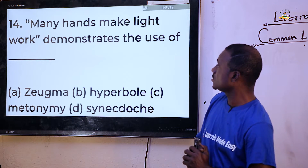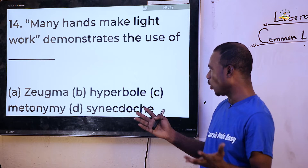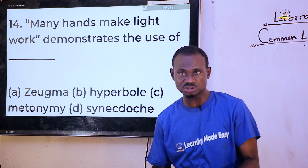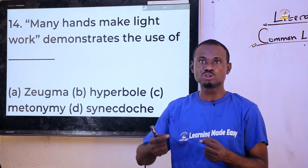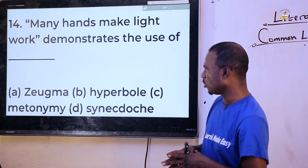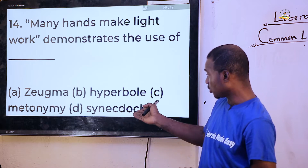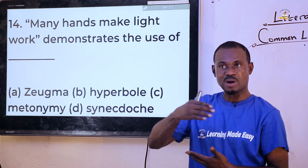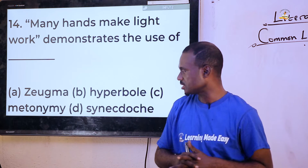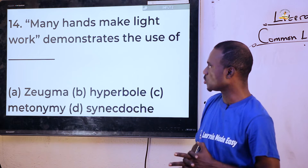Question fourteen: 'Many hands make light work demonstrates the use of dash.' Options are zeugma, hyperbole, metonymy, and synecdoche. It is not zeugma — that uses a verb for two purposes. Not hyperbole — that is exaggeration. Not metonymy — that is a change of name or figure of association. The answer is synecdoche, where a part represents a whole or a whole represents a part — as in 'many hands' representing people.